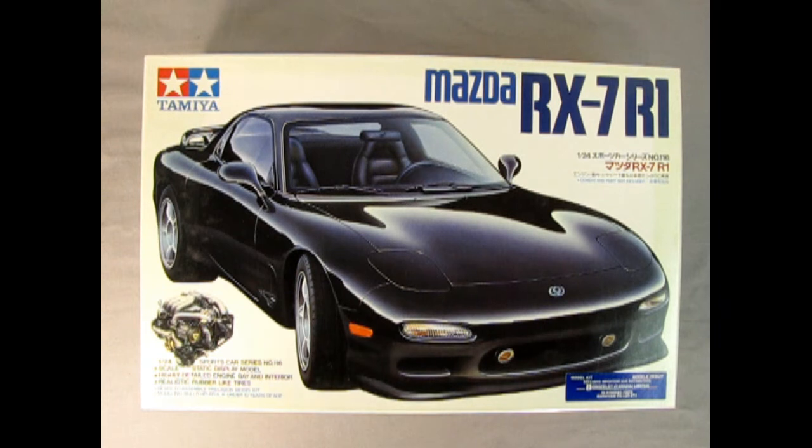This is a 1:24 scale highly detailed sports car series model kit. It's a static display model that means it doesn't have an electric motor in there. It has highly detailed engine bay and interior, realistic rubber-like tires. It is ready to assemble and it's meant for kids ages 10 and up.